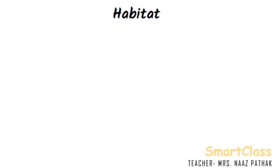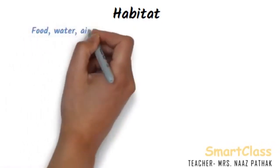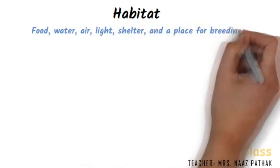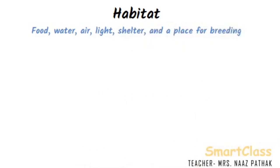The place where plants and animals live is called its habitat. A habitat provides food, water, air, light, shelter and a place for breeding to the plants and animals living in it.